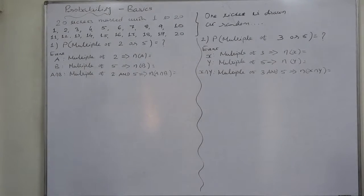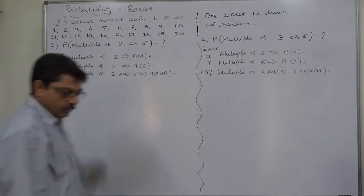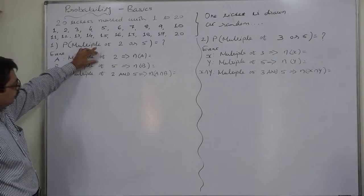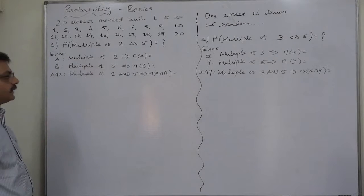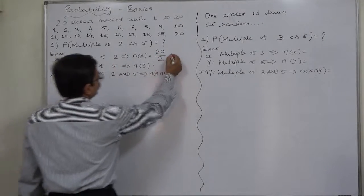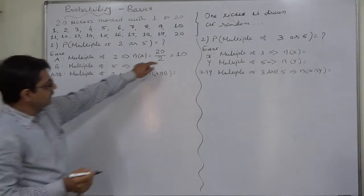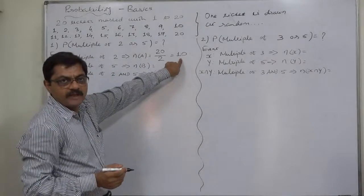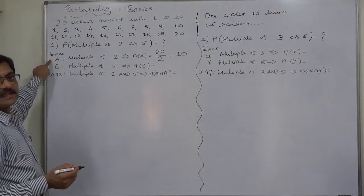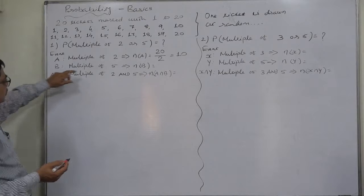For the first case, we want the probability that the number on the drawn ticket is a multiple of 2 or 5. First, how many multiples of 2 are there in 1 to 20? That is 20 divided by 2, so there are 10 multiples of 2. These 10 are the favorable cases for event A, so the number of cases favorable to A is 10.